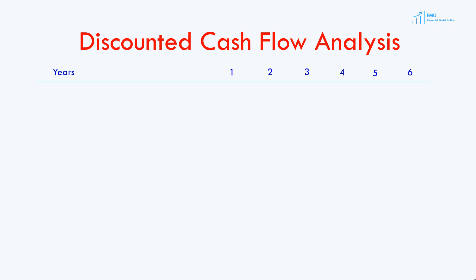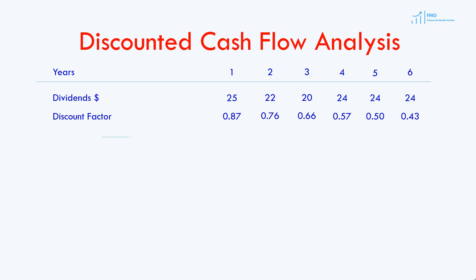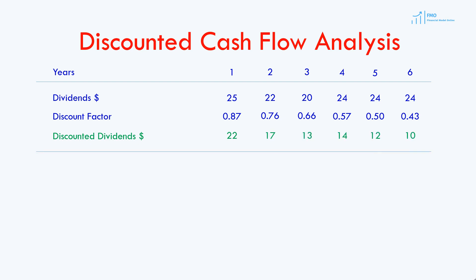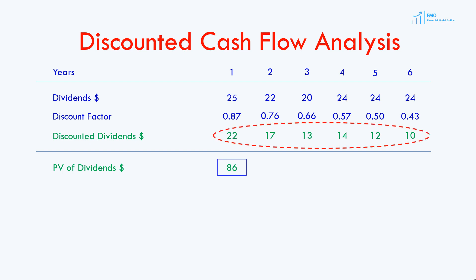Let's assume that our project's life is 6 years. We have our dividends and discount factors based on a discount rate of 15%. We then calculate discounted dividends, which is dividends times the discount factor. We calculate discounted dividends in this fashion for all years, then sum them to get the present value of dividends, which in our case is equal to 86.